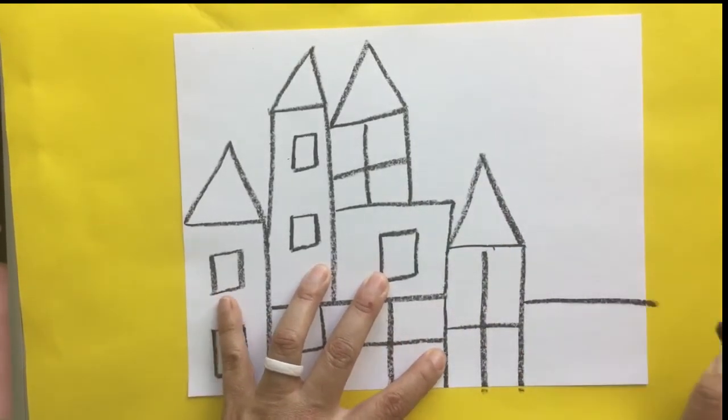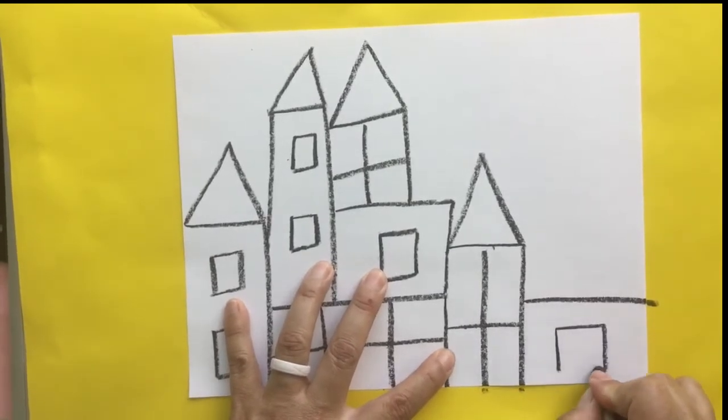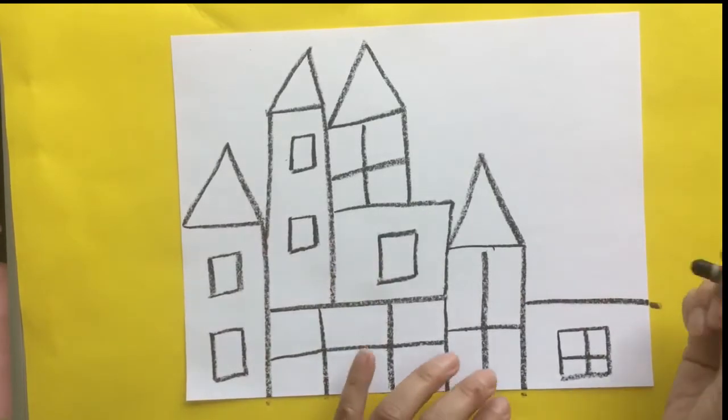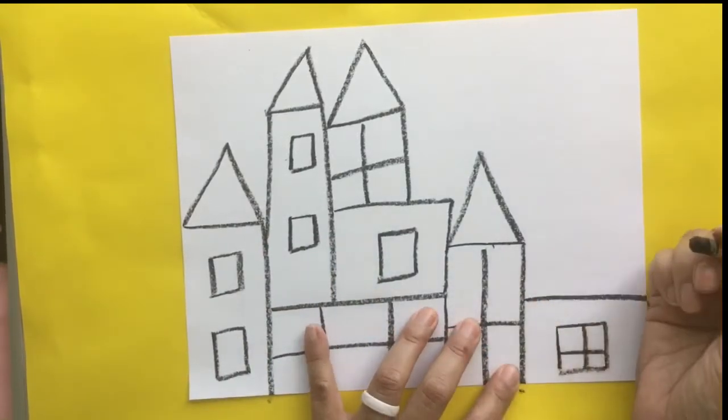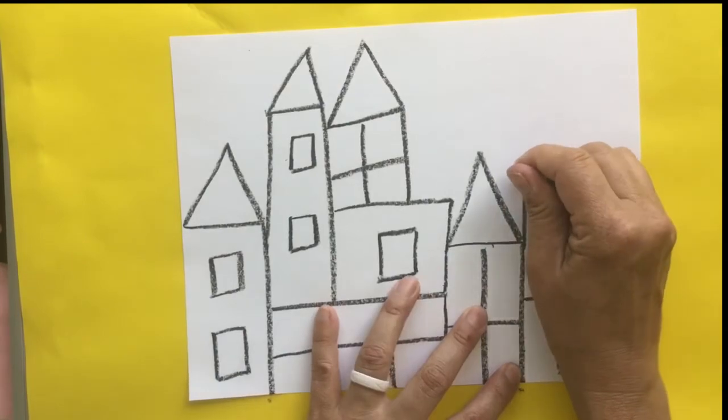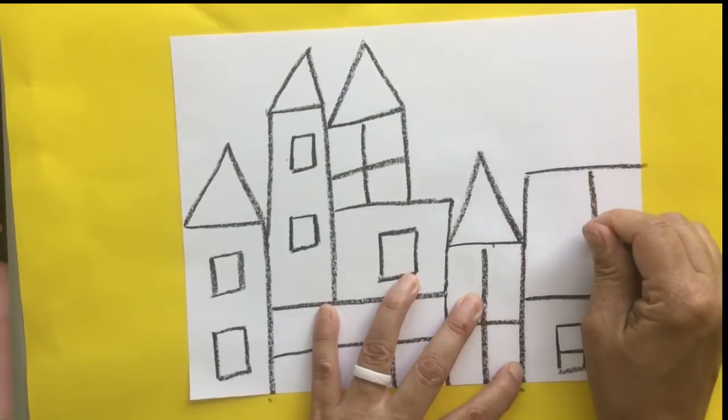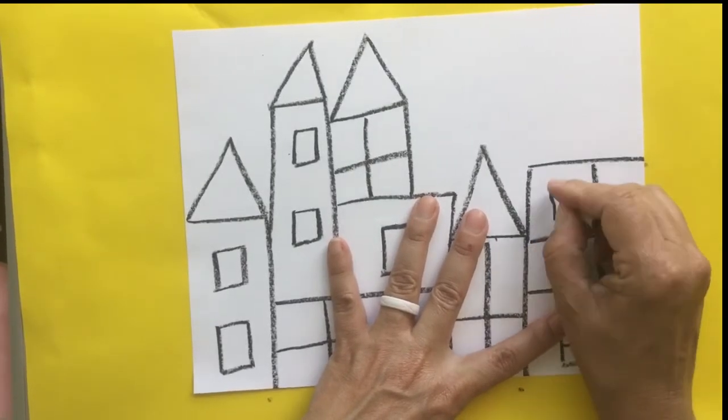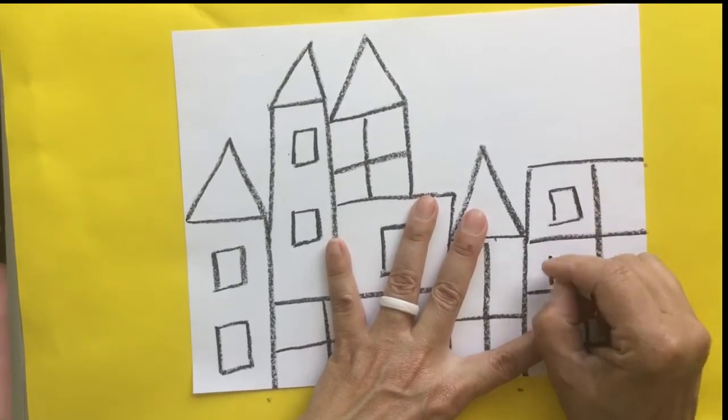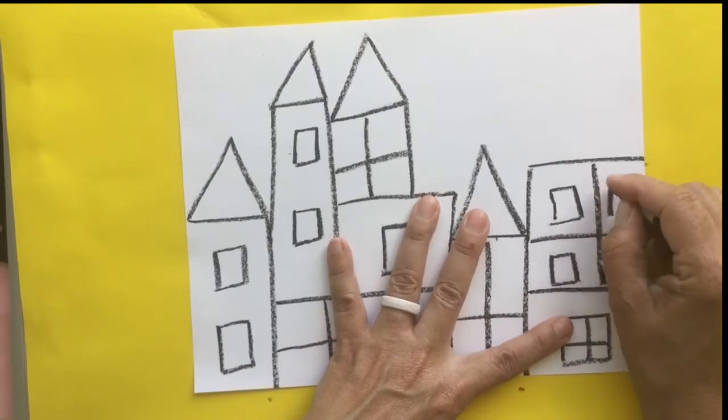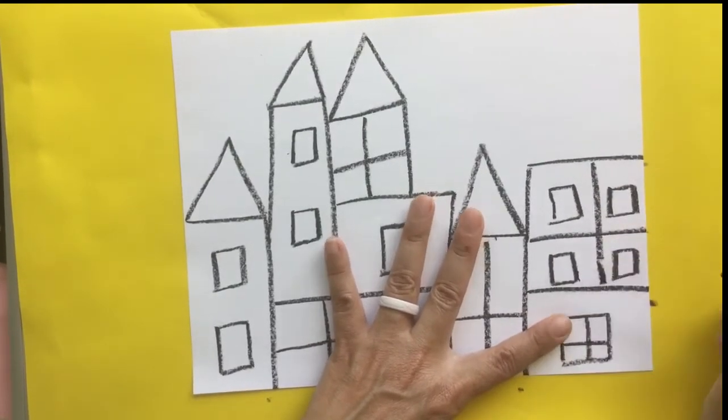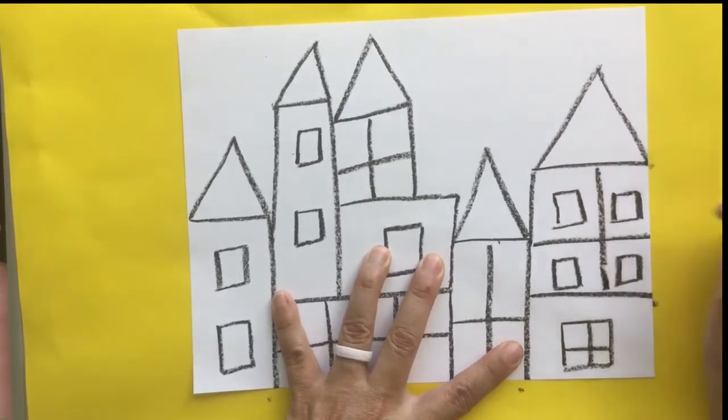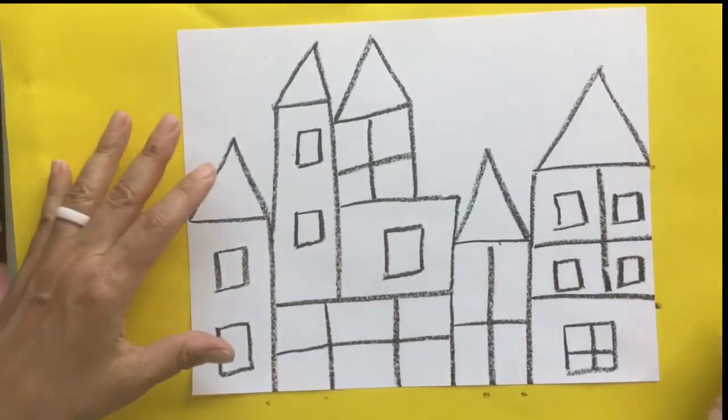I'm just going to finish up with my shapes here to make my castle. Again, Paul Klee's castle didn't necessarily look realistic; he just kept drawing and building it with different shapes. So the more squares, rectangles, and triangles you use, the more interesting your castle is going to look.